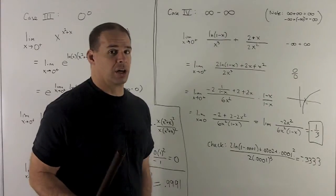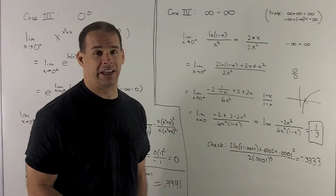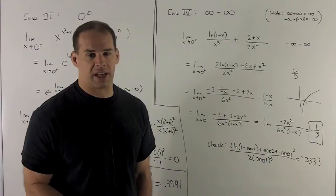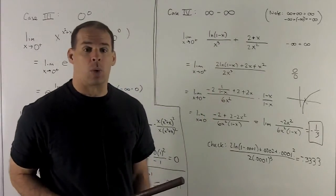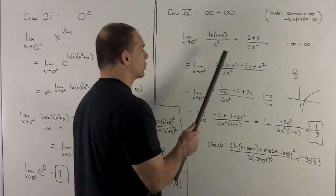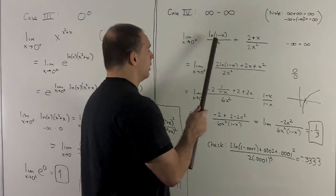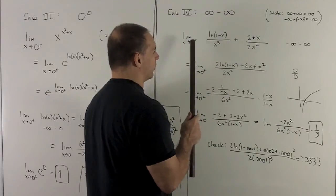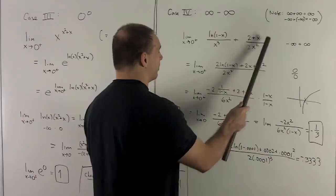For the last case, we consider infinity minus infinity. Infinity plus infinity is fine — that's just plus infinity. Minus infinity minus infinity is minus infinity. But when the signs differ, you can't say anything without doing more work. The example is: limit as x goes to 0 from the right of ln(1 minus x)/(x³ + 2) plus x/(2x²). This is roughly 1 over 0 — something infinite.